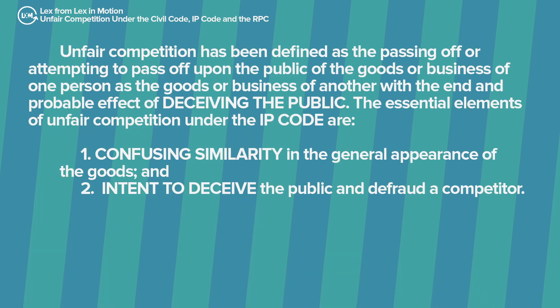The Intellectual Property Code has a different definition of unfair competition. Under the IP Code, unfair competition has been defined as the passing off, or attempting to pass off upon the public, the goods or business of one person as the goods or business of another, with the end and probable effect of deceiving the public. The essential elements are: one, confusing similarity in the general appearance of the goods; and two, intent to deceive the public and defraud a competitor.